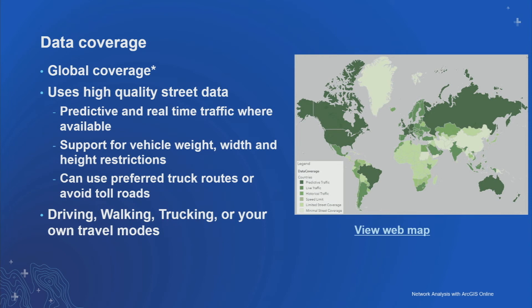Esri provides street data globally. There is a map showing worldwide coverage — areas in dark green have the best possible coverage, and as the intensity of green decreases, so does coverage quality. Where we have good quality coverage, we have predictive and real-time traffic so your analysis can make use of traffic while finding routes. We also have support for logistical attributes like street clearance — if clearance is not high enough, we won't route through that street.